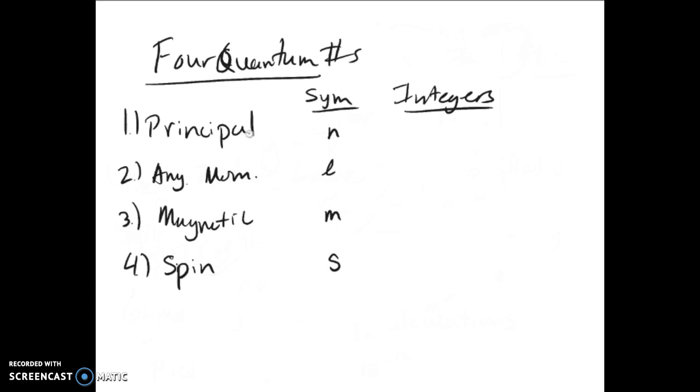The principal quantum number describes the energy orbital of an electron. The angular momentum describes the shape of the orbital. Magnetic number describes the size of the orbital. And the spin number describes the spin of the electron. Now the integers that these can take on, the principal is all positive integers. Angular momentum can be anything zero and forward, basically whatever n's value is minus one. Magnetic can be from negative L all the way up to positive L. And the spin of the electron is either positive one-half or negative one-half.